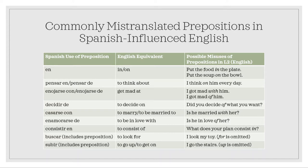'Decidirte' in Spanish translates as 'to decide on,' but might be mistranslated as 'did you decide of what you want.' 'Casarse con' should be translated as 'to marry' or 'be married to,' but often gets said as 'is he married with her.' 'Enamorarse de' should translate as 'to be in love with,' but might be said as 'is he in love of her.' 'Buscar' in Spanish includes the preposition in the word itself and means 'to look for,' so a bilingual student might omit the preposition and say 'I look my toy' instead of 'I look for my toy.' 'Subir' means 'to go up' and can get mistranslated as 'I go the stairs' instead of 'I go up the stairs.'